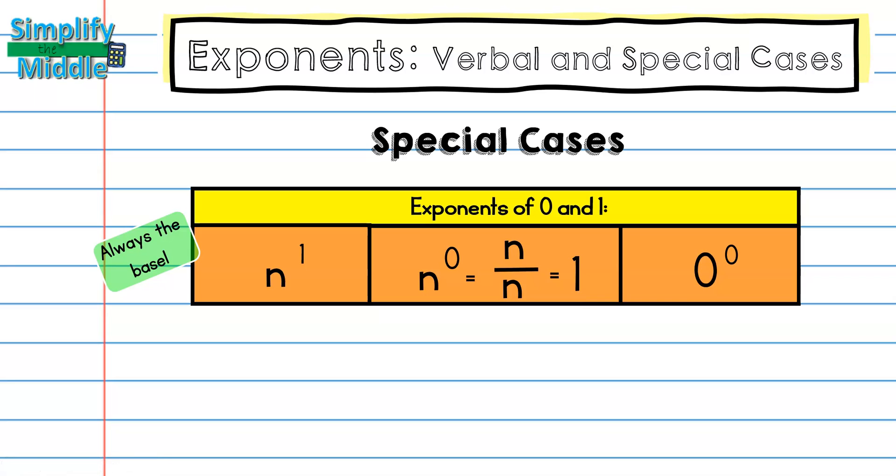There is an exception to this, of course. Zero to the zero power would be zero over zero. Since I can't divide anything by zero, zero to the zero power is the only exponent that's undefined.